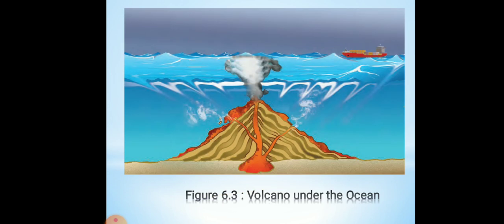This is a picture of a volcano under the ocean. You can see the ocean water on top where a boat is shown. Deep down under the ocean, you can see red colour lava coming out from the earth's crust — hot melted rock that gushes out with pressure and heat. You can also see some smoke and ash being added to the ocean water. We will learn more about these underwater volcanoes.